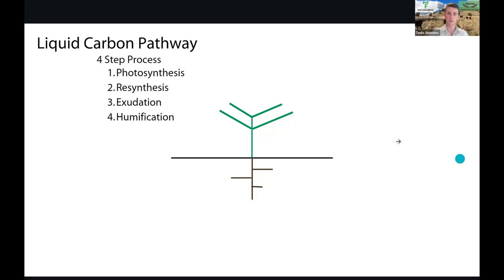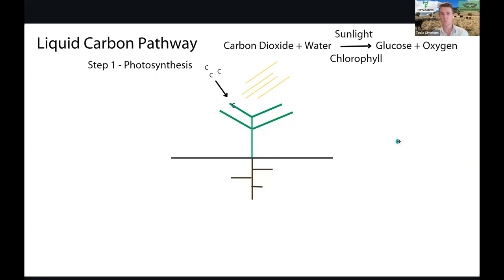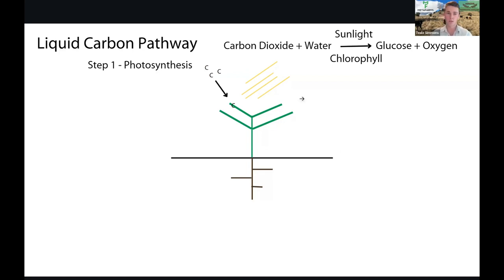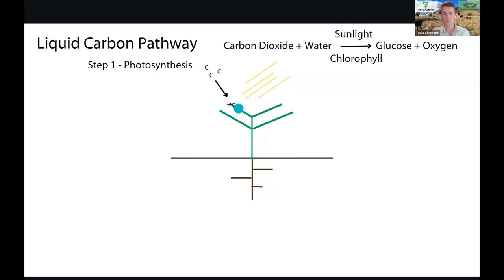First is photosynthesis. This is where our plants convert carbon dioxide in the atmosphere with water in our chlorophyll using sunlight into glucose and oxygen. If we follow the carbon, it goes from carbon dioxide into glucose, which is meant to be in our leaves.